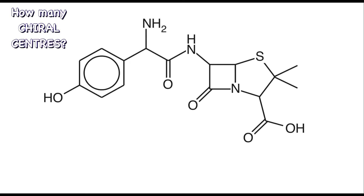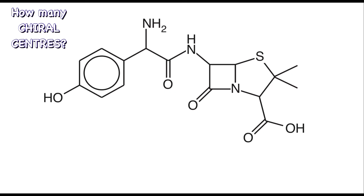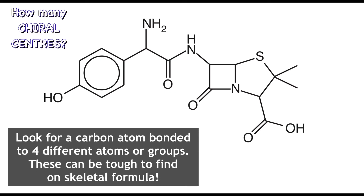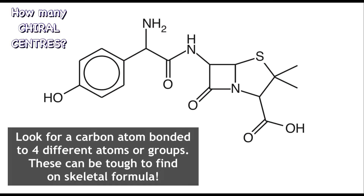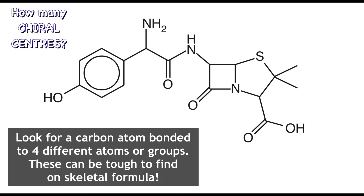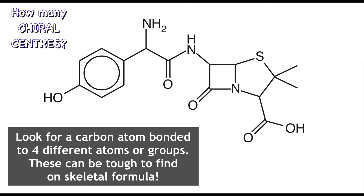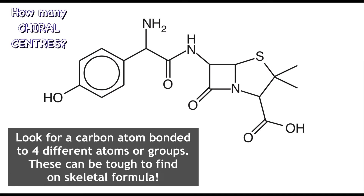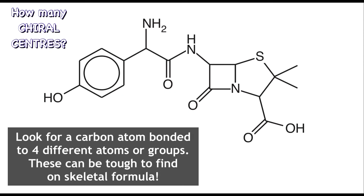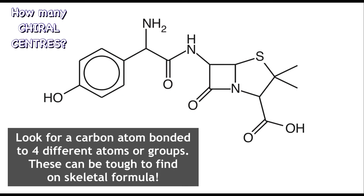A chiral centre on an organic molecule is when a carbon atom is bonded to four different atoms or groups. Being able to locate all the different chiral centres on a large structure like this one requires a clear exam strategy. Quickly pause the video here and see how many you can find on this molecule before I give you some tips and a full walkthrough.